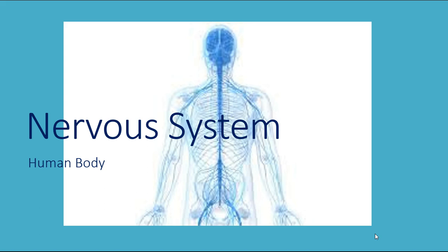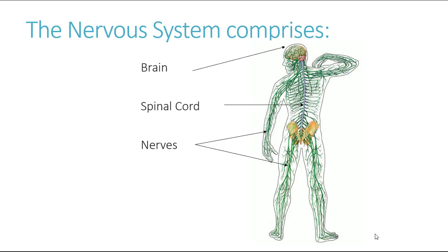This video will cover the nervous system as part of the human body unit. The structures that you need to know about from the nervous system are the brain, spinal cord, and some notable examples of nerves, which we'll discuss a little later.